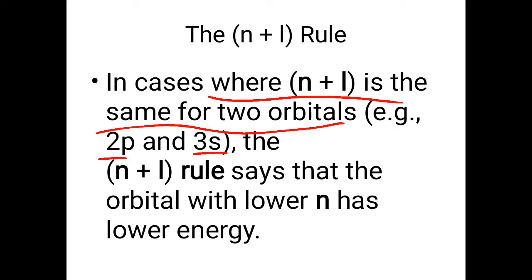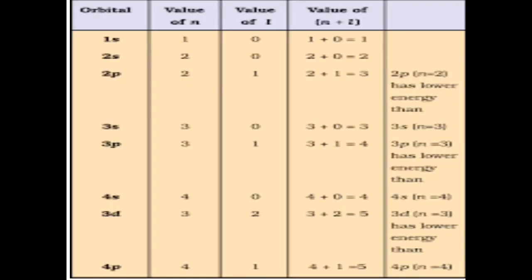And in this case where n plus l is the same for two orbitals, for example 2p and 3s. Now this two is the n and I remind you the s sub shell has zero value, p is one. Now you can calculate it yourself and if you're getting the same n plus l value, then the value or the sub shell which has lower value of n will be filled first. Now you can read this slide again.